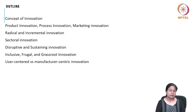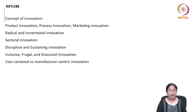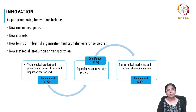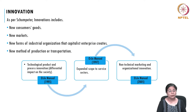The last section in this module will focus on user-centric and manufacturing-centric innovation. As Schumpeter pointed out, innovation includes new consumer goods, new markets, new forms of industrial organization that capitalist enterprise creates, and new methods of production and transportation.